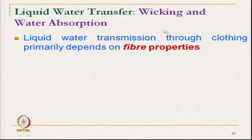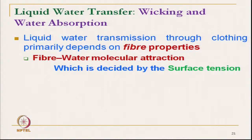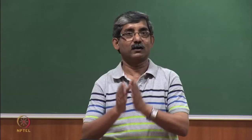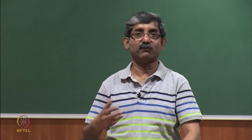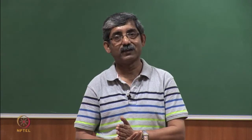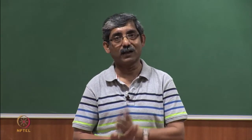Liquid water transmission through clothing primarily depends on fibre characteristics. Fibre-water molecular attraction is the surface tension. If the surface tension is low, it will spread and get wet, which is decided by the surface tension and capillary pore distribution — structure of pore, structure of yarn, structure of fabric. So the two key factors are fibre characteristics and fabric or yarn characteristics.